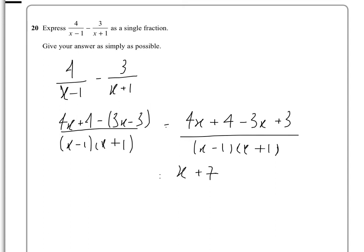The bottom then multiplies out: x times x is x squared. Then it will be plus x minus x, so they'll cancel out, and then minus 1, giving x squared minus 1.